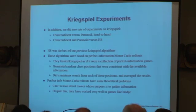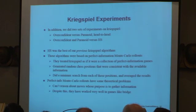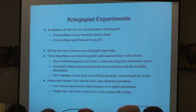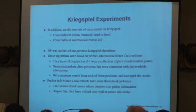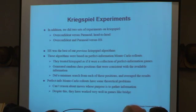In addition to the Olympiad, we did some experiments on Kriegspiel. We played the overconfident versus paranoid strategies head to head, and also played both of them versus HS. HS was the best of our previous Kriegspiel algorithms, based on a perfect information Monte Carlo rollout. It treated Kriegspiel as if it were a collection of perfect information games — generating random chess positions consistent with available information, doing an ordinary minimax search on each, and averaging the results. However, it cannot reason about moves whose purpose is to gather information, because it assumes perfect information. Despite this problem, it has worked very well in games like Bridge.